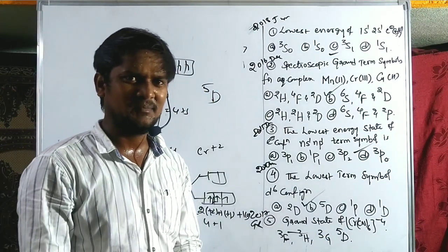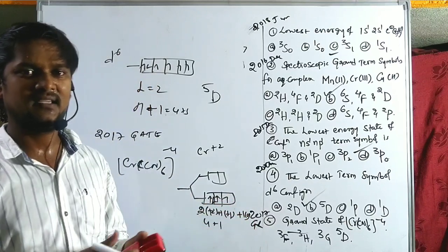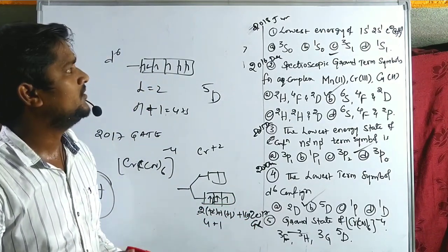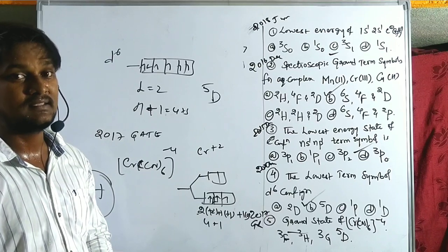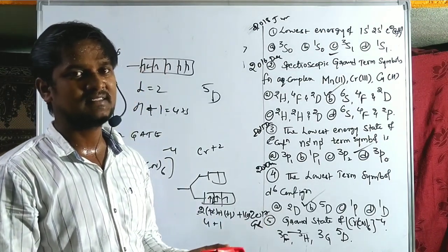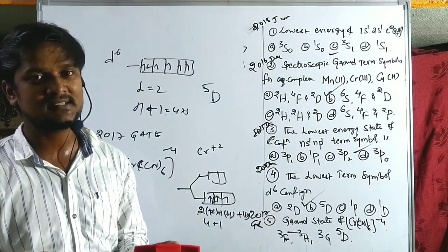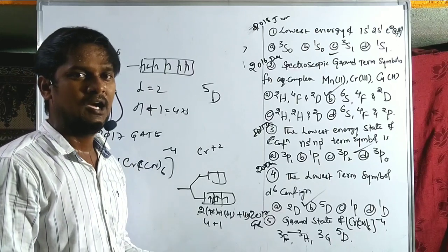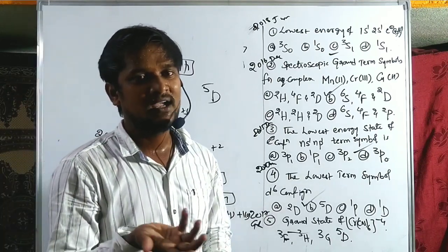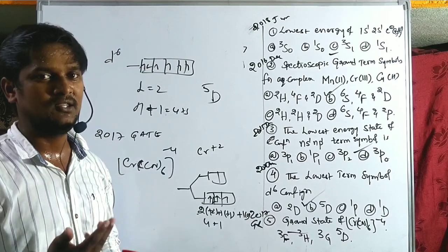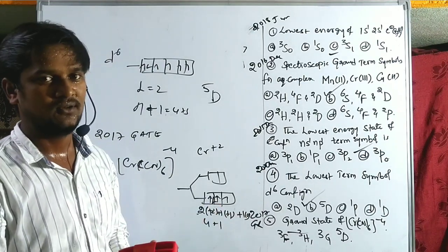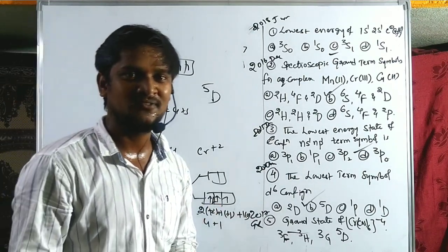These are the problems from previous year CSIR and GATE exams. In the next video, I will cover the number of possible terms — for example, D2 configuration has 45 microstates — and how to calculate all possible terms using Hund's rules. Thank you for watching.